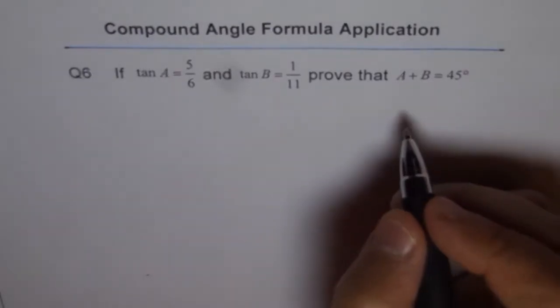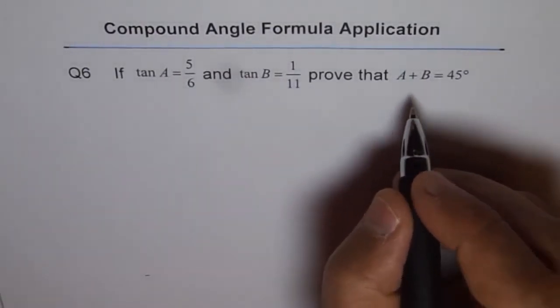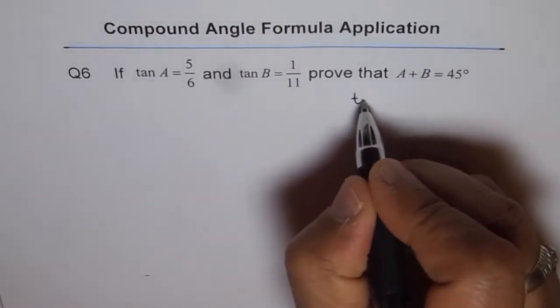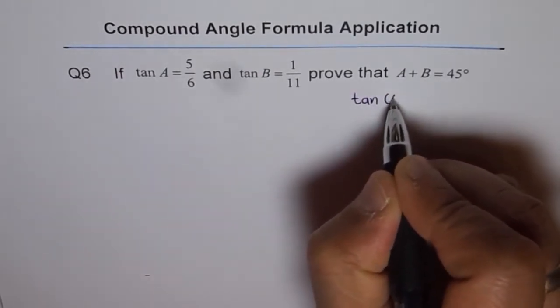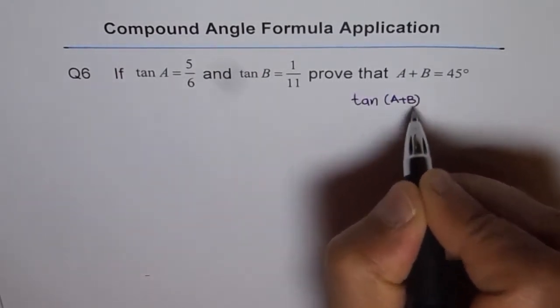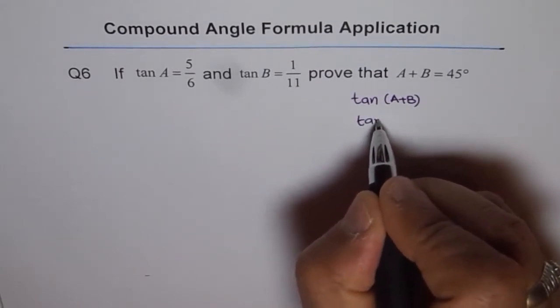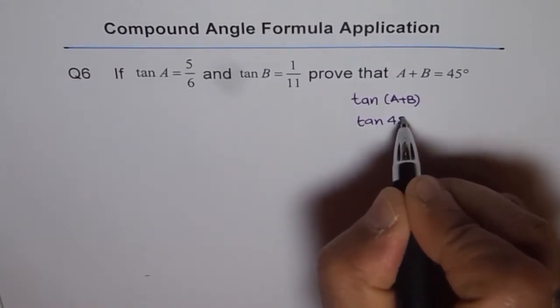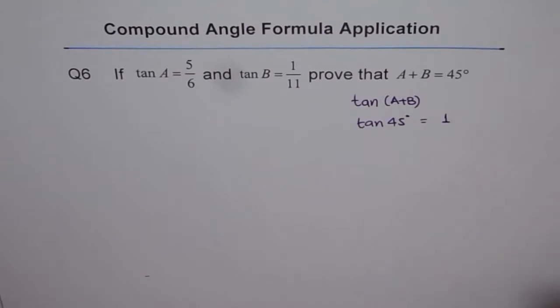So basically A plus B is 45 degrees. That means what is tan of A plus B? Tan of A plus B - what I'm trying to say is tan of 45 degrees is actually equal to 1.